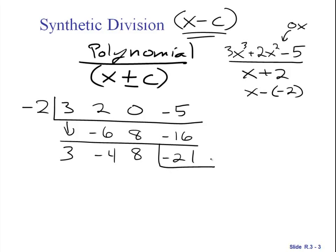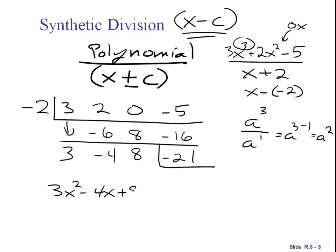The last number is always your remainder. And then these numbers are your coefficients of your new polynomial. Because you started with a polynomial of degree 3 you divided by a polynomial of degree 1. We are going to be left with a polynomial of degree 2. So our answer is going to be 3x squared minus 4x plus 8 plus our remainder, so minus 21 over x plus 2. And that is synthetic division.